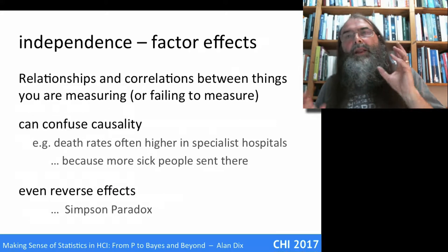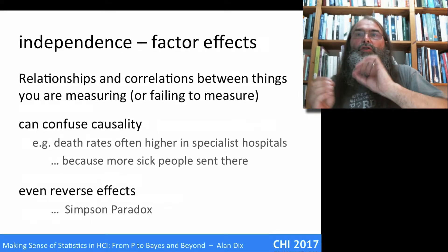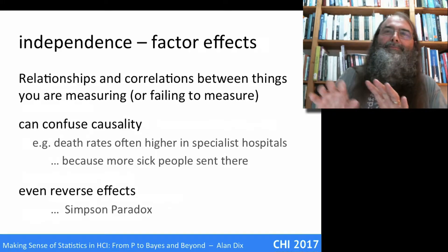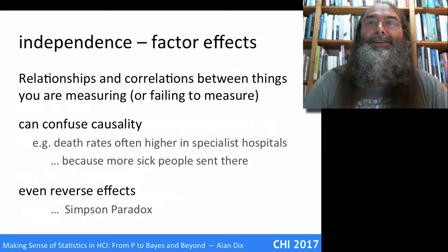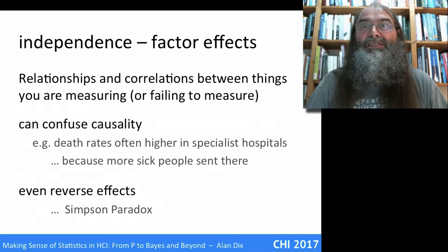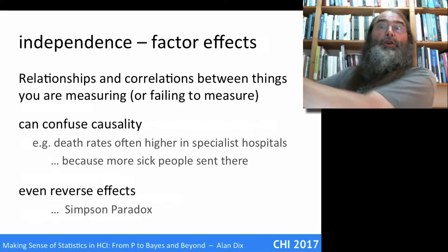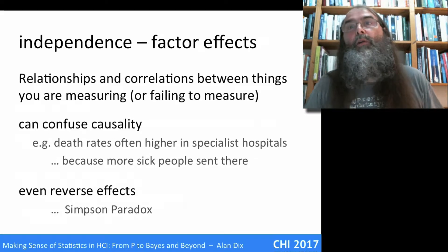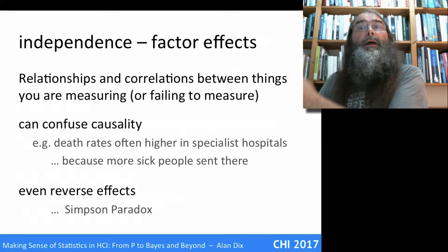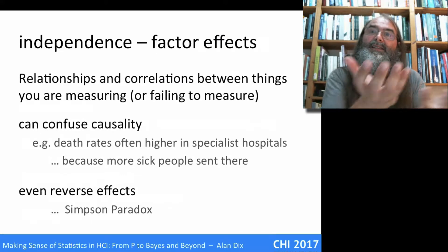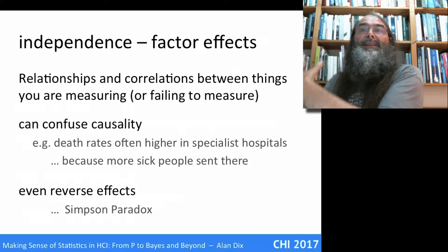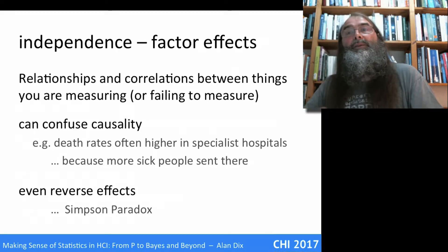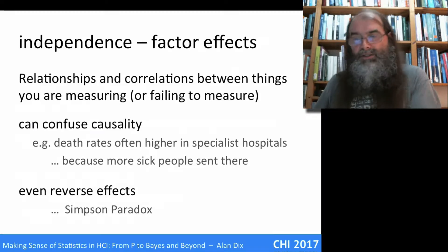Another kind of independence issue is when the things you're measuring are correlated with each other. A classic example: in hospitals you find that specialist hospitals have a high death rate — does that mean you shouldn't go to a specialist hospital? Of course not. People go to specialist hospitals because they have difficult conditions not dealt with well by less specialist hospitals. So there are two effects relating to each other, and if you're not careful you'll say death rate is higher in specialist hospitals without accounting for the kinds of patients there.